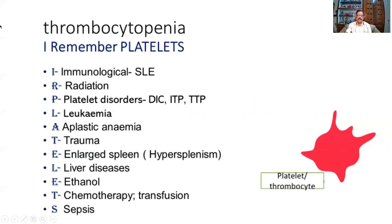Please recall the mnemonic on thrombocytopenia: I REMEMBER PLATELETS. I for immunological, R for radiation, P for platelet diseases such as DIC, ITP, TTP, L for leukemia, A for aplastic anemia, T for trauma, E for enlarged spleen and hypersplenism, L for liver disorders, E for ether, T for transfusion or therapy such as chemotherapy, S for sepsis.